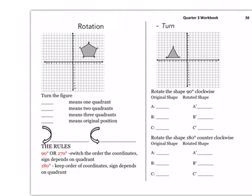All right, so page 56. So 90 degrees means one quadrant. 180 is 2. 270 is 3. And 360 is 4. That takes you back to the original position.